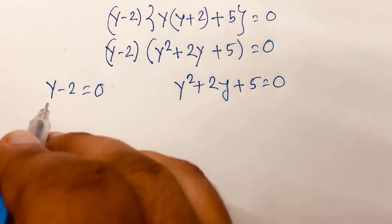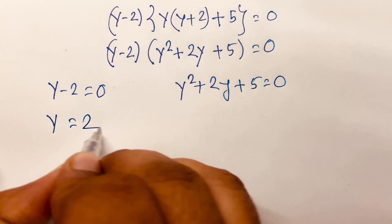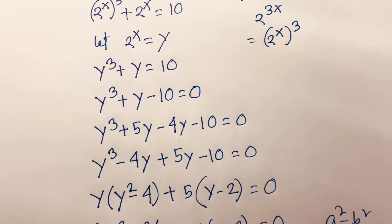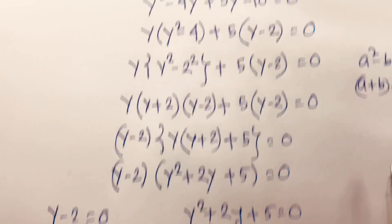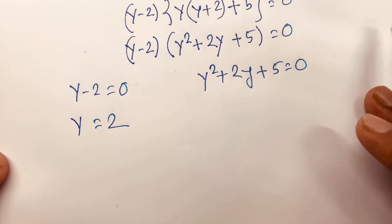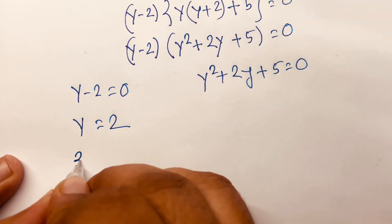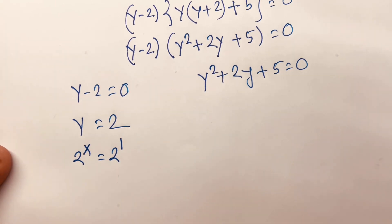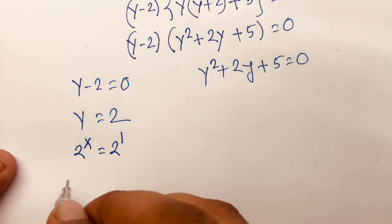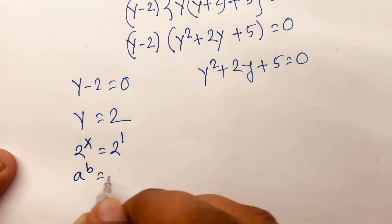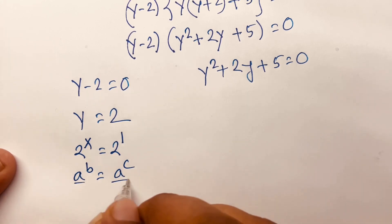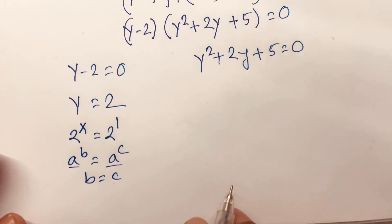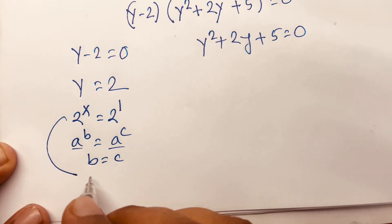From case one, y equals 2. Remember that y equals 2 to the power x. So 2 to the power x equals 2 to the power 1. By the exponential rule, if a to the power b equals a to the power c, then b equals c. So the exponents are equal, giving x equals 1.